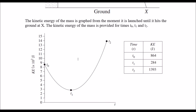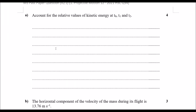and then t2 where we land at point X. It's quite an interesting question because it talks about relating kinetic energy to the vertical and horizontal components. The question asks us to account for the relative values of kinetic energy at t0, t1, and t2. What we mean by 'account' is we want to explain the cause — what causes the particular shape.